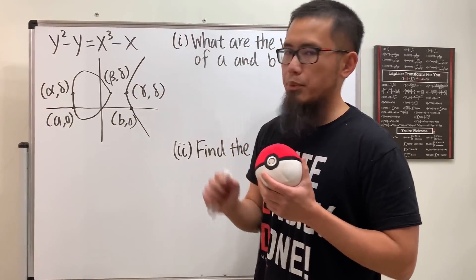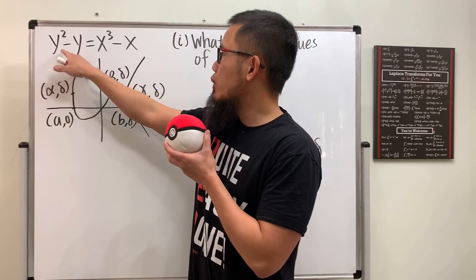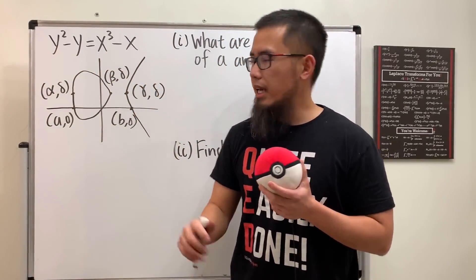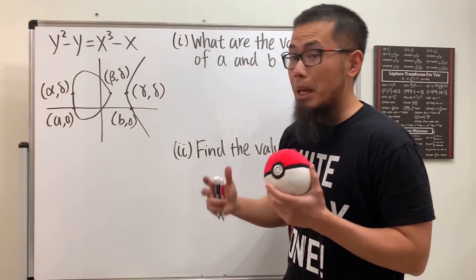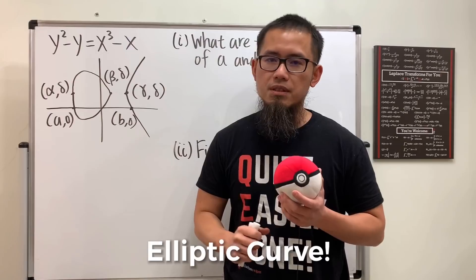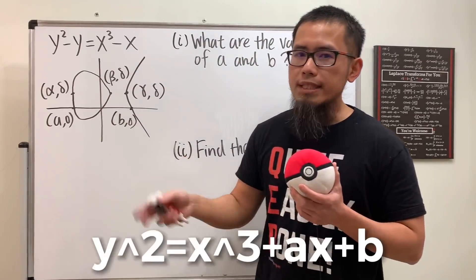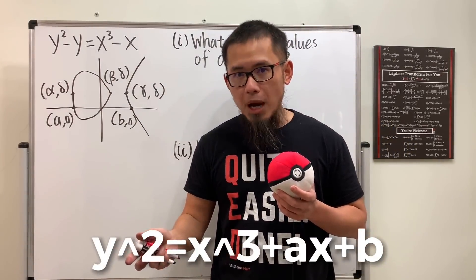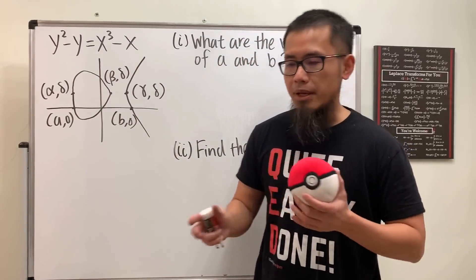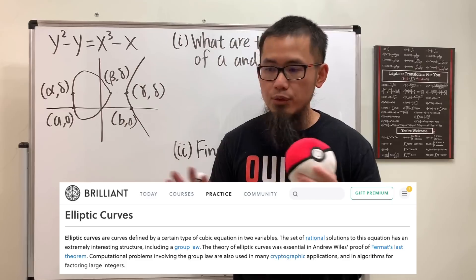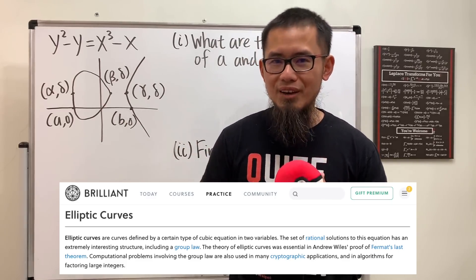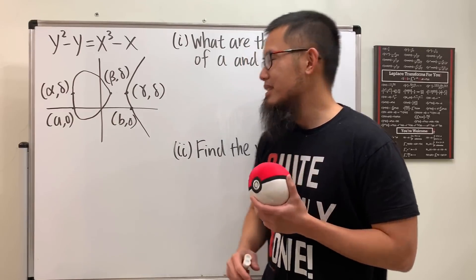Here's the question: we're given a graph with all the labelings and the equation y² - y = x³ - x. When I saw this I was really excited because this is actually just a specific case of elliptic curves. The general case is y² = x³ + ax + b, and this curve has applications in cryptography. I'll have some relevant links in the description as well.